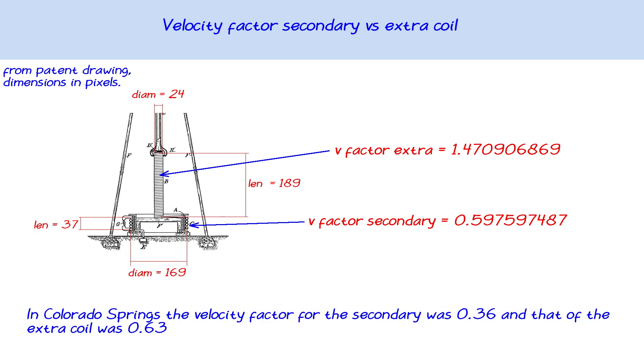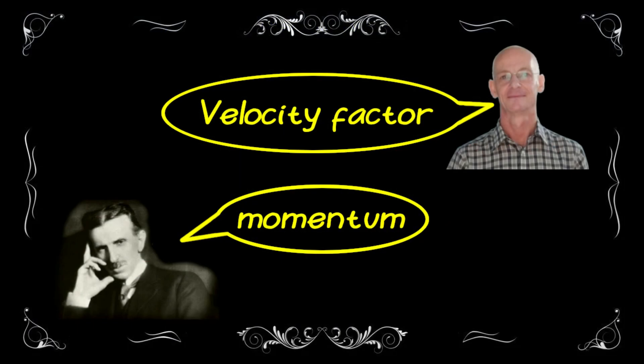The secondary always has a velocity factor smaller than one, while the extra coil, most of the times, has a velocity factor greater than one. But this is just my interpretation. Here is how Tesla explains it.